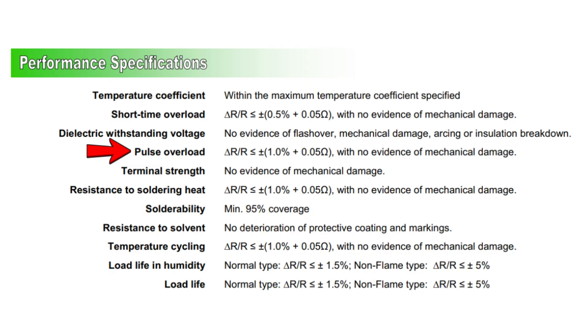For a 10 ohm resistor, 1.0% is plus or minus 0.1 ohm. When you add 0.05 ohm, the total is plus or minus 0.15 ohm.